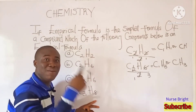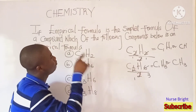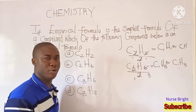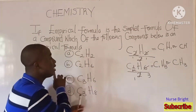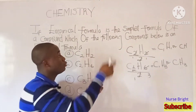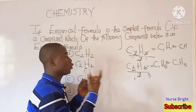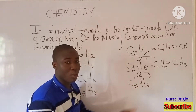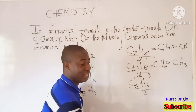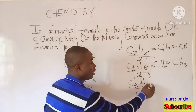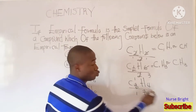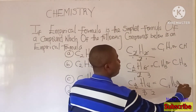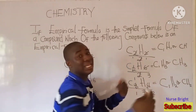Let's check if option C is an empirical formula. The question asks which of the following compounds is an empirical formula, and we've seen that options A and B are not, because we can break them down further. Option C is C3H6. Dividing by 3: 3 goes into 3 to give 1, and 3 goes into 6 to give 2. So we get C1H2, or simply CH2 — the methylene group. So option C is also not an empirical formula.